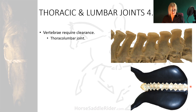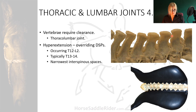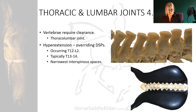Horses fixed in hyperextension of the back when ridden risk overriding dorsal spinous processes — kissing spines — which is very painful. These can occur between T12 to L2, but typically at T13 to T14 where the narrowest interspinous spaces occur and where rider weight is concentrated. What appears to be a generous gullet in this picture is actually vertebrae from a small pony laid within an adult-sized saddle.